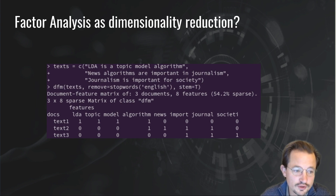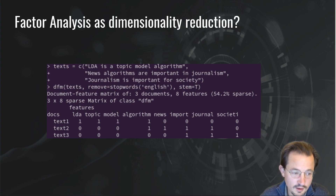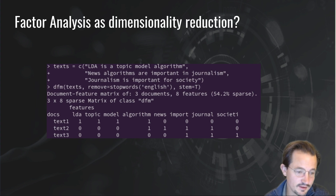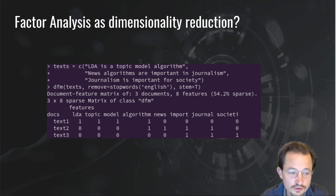The same idea can be used for text. Suppose we have some pretty silly text, like 'LDA is a topic modeling algorithm,' 'news algorithms are important in journalism,' 'journalism is important for society,' and we would cluster this. If you just look at the document feature matrix, you see that's a matrix of three rows by eight columns. This has already taken some of the stop words out, but there are eight informative words. The key idea here is that you might not need all those eight words to describe those three documents, so there might be latent factors underlying the distribution of those eight columns.